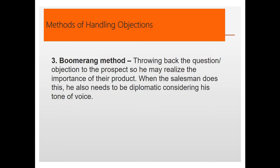Next is the Boomerang method — throwing back the question or objection to the prospect so they realize the importance of the product. You have to be very diplomatic and consider the tone of your voice. For example, if you're selling a water purifier, you might ask: 'Sir, do you trust that your faucet is giving you drinking water safe from pollutants?'